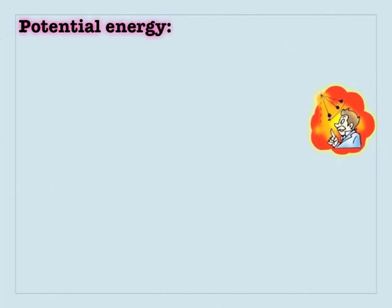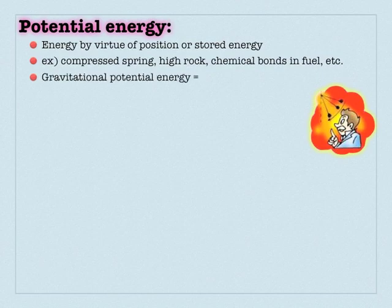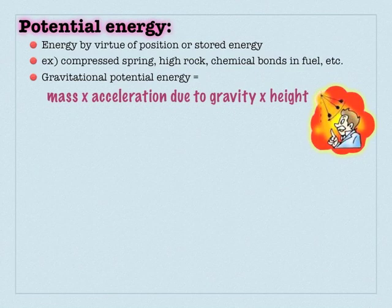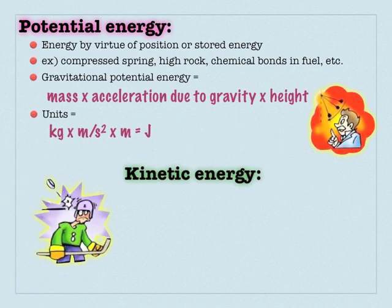We're going to quickly touch on three types of energy. Potential energy is stored energy or energy by virtue of position. One type is gravitational potential energy, which makes a great example of units: mass times acceleration due to gravity times height (mgh). Mass is in kilograms, acceleration is meters per second squared (about 10 m/s² or 32 ft/s²), times meters for height. Notice how that ends up being joules: kilograms times meters squared per second squared.